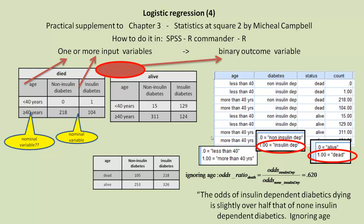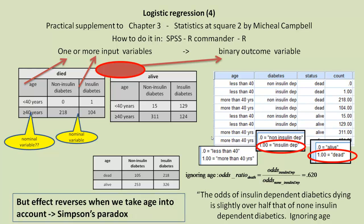That means the odds of insulin-dependent diabetics dying is slightly over that of non-insulin-dependent diabetics, ignoring age. The whole point of this analysis, if you read Michael Campbell's chapter, is because we come across Simpson's paradox. It sounds like it's better to have insulin-dependent diabetes than non-insulin-dependent. Actually, when you look at them for different age ranges, under-40s and over-40s, you find that value is reversed, something like 1.2.